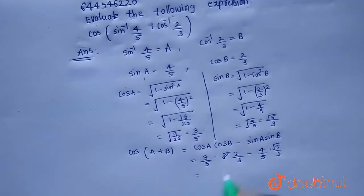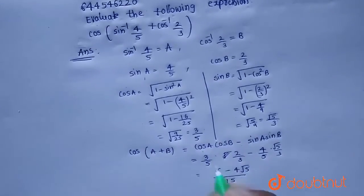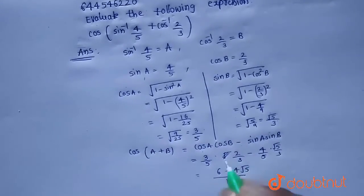So from this, 3 times 2 is 6, 6 minus 4 root 5 divided by 15. As the denominators are same, I added the numerators. So that will be equals to 6 minus 4 root 5 divided by 15.